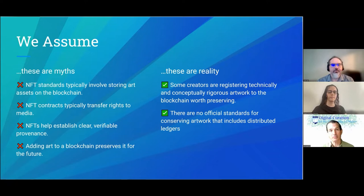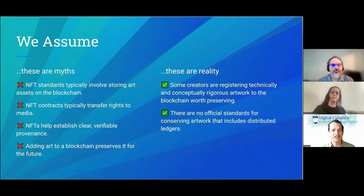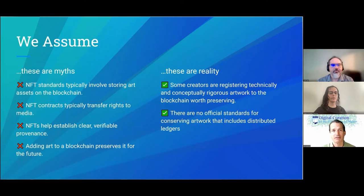Third myth: NFTs help establish clear verifiable provenance. This is an illusion promoted by crypto crusaders — while you can see who sold what over time, the wallets people use to transact in NFTs can be anonymous, so it's not necessarily clear who is buying what from whom. And the platforms that NFTs are sold on often obscure this. Fourth myth: adding art to blockchain preserves it for the future — also a common misunderstanding, and one we're going to tackle directly.